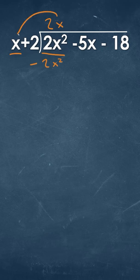Since we multiplied it by this x, we also have to multiply it by the 2. 2x times 2 gives us plus 4x. We subtract that, put this in parentheses. This would cancel out, and we'd have negative 9x.